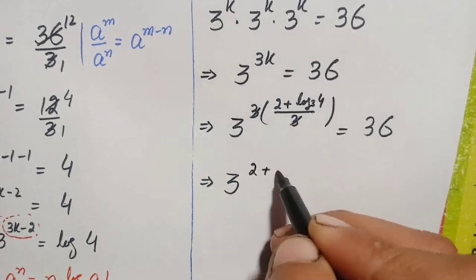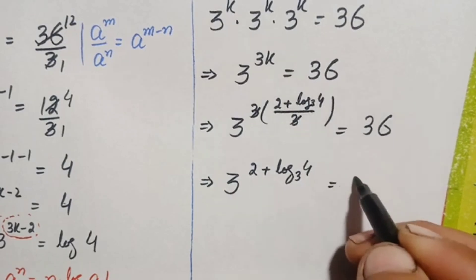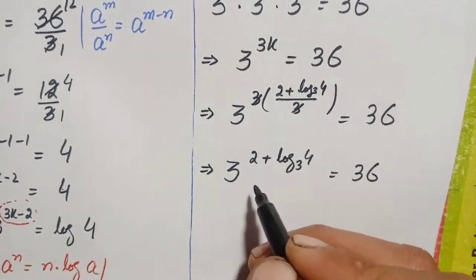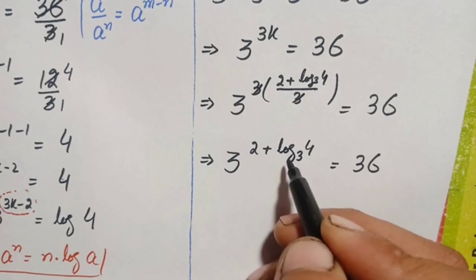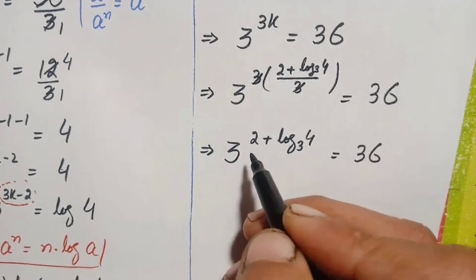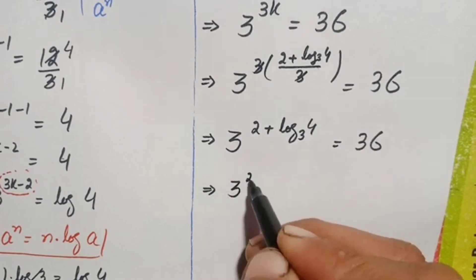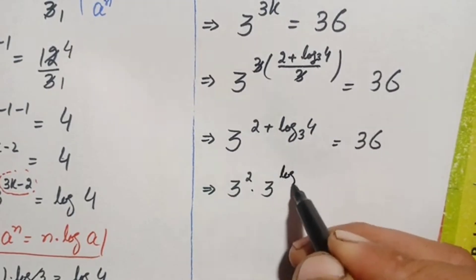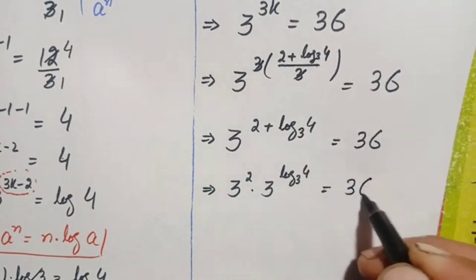On the left hand side, we use the exponential identity a^(m+n) = a^m × a^n. Splitting the exponent, this becomes 3 raised to power 2 times 3 raised to power log base 3 of 4, which equals 36.